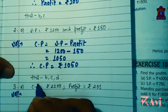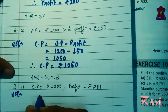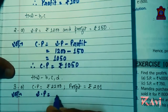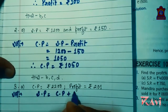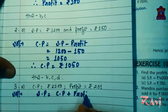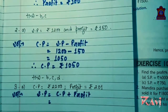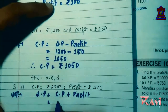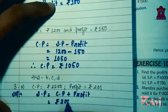When cost price and profit is given, SP is very simple: SP equals CP plus profit. Cost price is what? 2200. You can write rupees 2200.